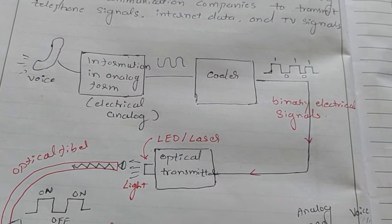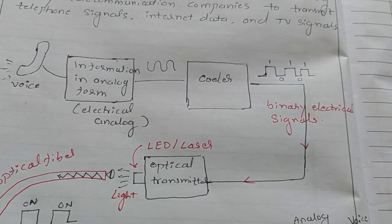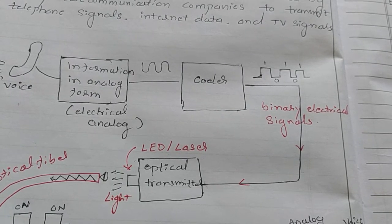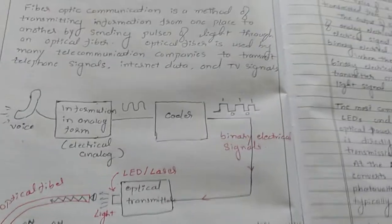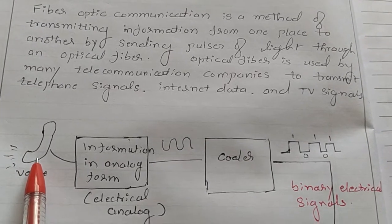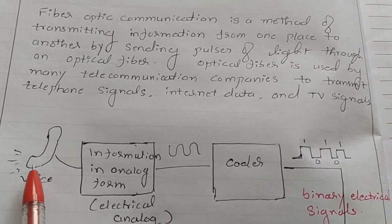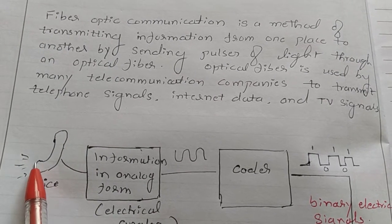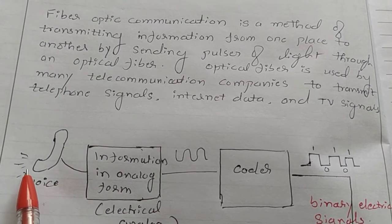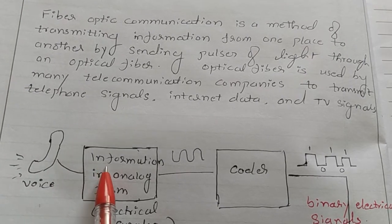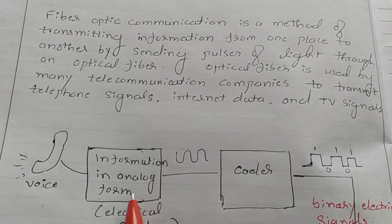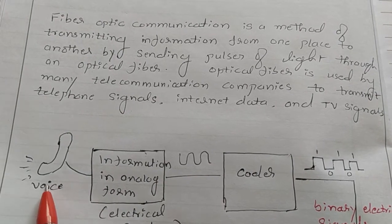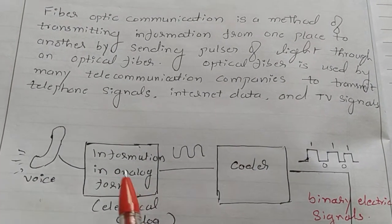This is the basic block diagram of an optical fiber communication system. Let us consider the simple use of optical fiber in transmitting the voice of a telephone user. The telephone has two sections: the receiver section near your ear and the transmitter section near your mouth. This voice is converted into an electrical signal in the form of an analog electrical signal using a transducer.